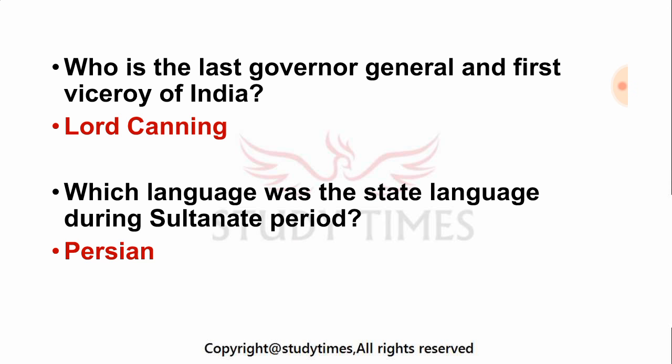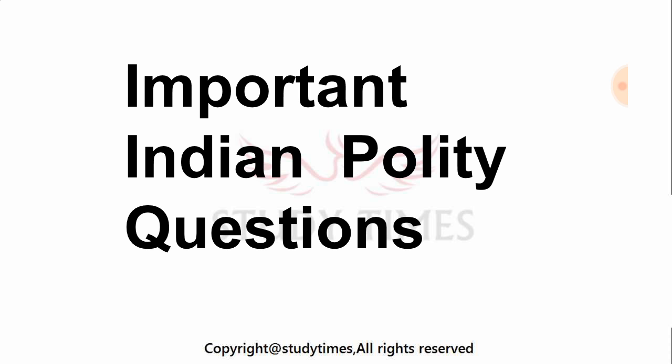Who is the last governor general and first viceroy of India? Answer is Lord Canning. Which language was the state language during the Sultanate period? Answer is Persian.